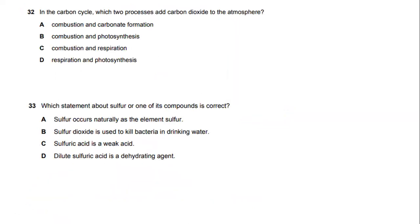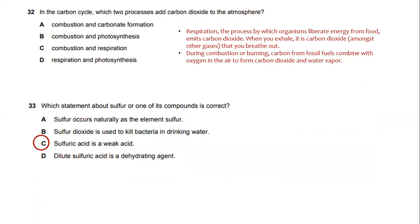In the carbon cycle, which two processes add carbon dioxide to the atmosphere? We have the processes of combustion and respiration. Respiration is the process by which organisms liberate energy from food and emit carbon dioxide. When you exhale, it is carbon dioxide among other gases that you breathe out. During combustion or burning, carbon from fossil fuels combines with oxygen in the air to form carbon dioxide and water vapor.